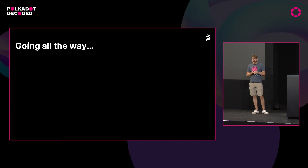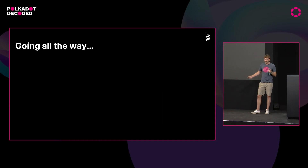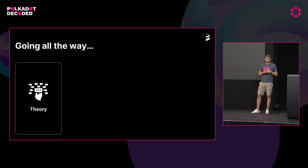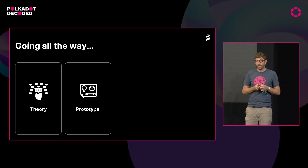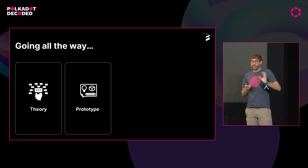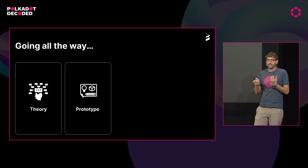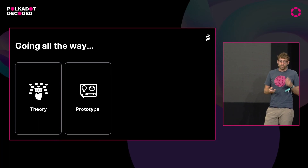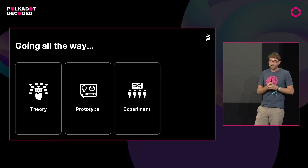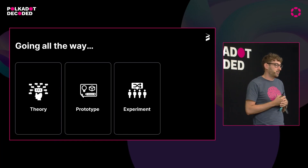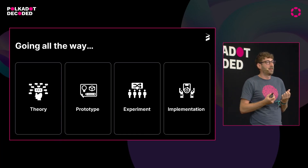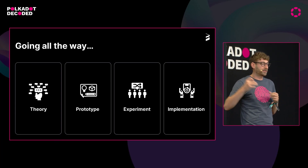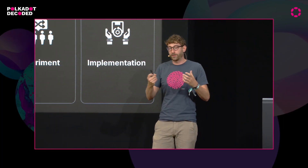I'm an applied researcher, so I want to go all the way from theory — understanding the problem and trying to fix it from the theoretical side — to building a prototype to make the theory work. But I don't want to stop there, because the theory can be flawed, and just having a prototype doesn't tell you anything about whether this is actually useful. So I also want to validate this by conducting an experiment. And I also don't want to stop there either, because I want to see it implemented, because only then can people actually benefit from it and it doesn't just disappear in some academic paper that nobody uses.